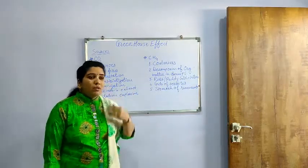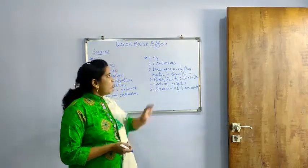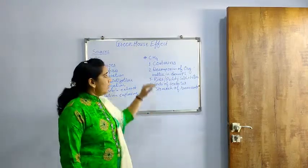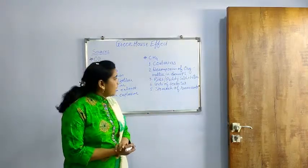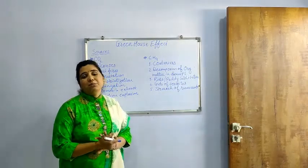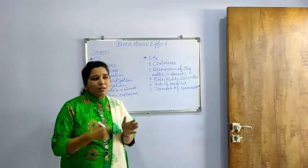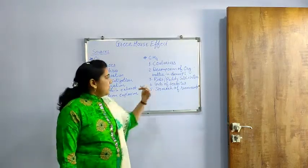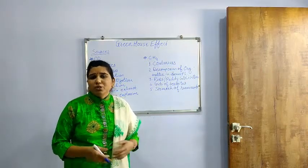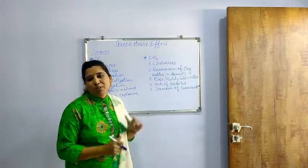Next is methane. From coal mines, there is a maximum exhaust of methane. Then, decomposition of organic matter in swamps: in swamp-type areas, a maximum amount of organic matter gets decomposed, from which methane gas is released. Rice or paddy cultivation is also a major source of methane release.